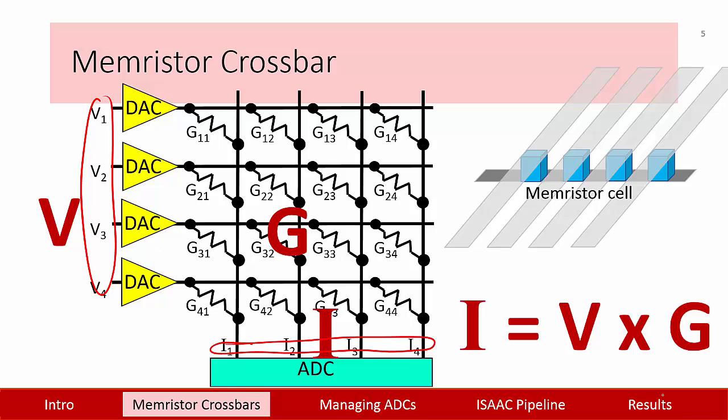This conversion is done with an analog to digital converter, or an ADC, which is a non-trivial circuit with high power and area overheads. This overhead grows almost exponentially with the number of digital bits being produced by that ADC. If the ADC produces an 8-bit digital result, its overhead is nearly twice that of an ADC that produces a 7-bit digital result.